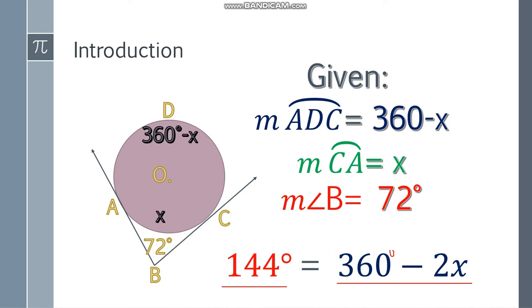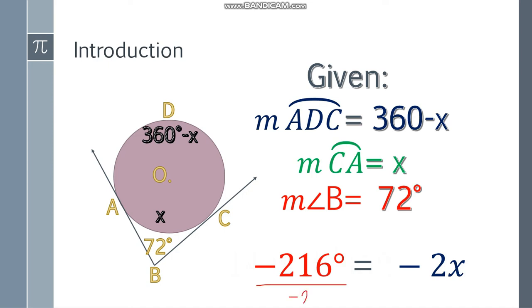Simplify further, isolate the x part. So we subtract 360 to both sides, that will be negative 216 degrees. This is equal to negative 2x. Divide both sides by negative 2, and you will get an answer of 108 degrees. So that is the value of x.